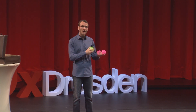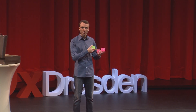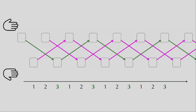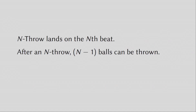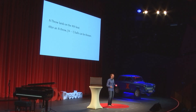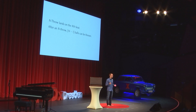When I've thrown a three-throw, I have time to throw two more balls. That's why I'm doing the three-ball cascade with three throws. As good mathematicians, we will generalize this concept to the concept of n-throws. An n-throw lands on the nth beat. In other words, after I have thrown an n-throw, I can throw n minus one additional balls. And when I have n balls and only do n-throws, this is the basic n-ball juggling pattern.